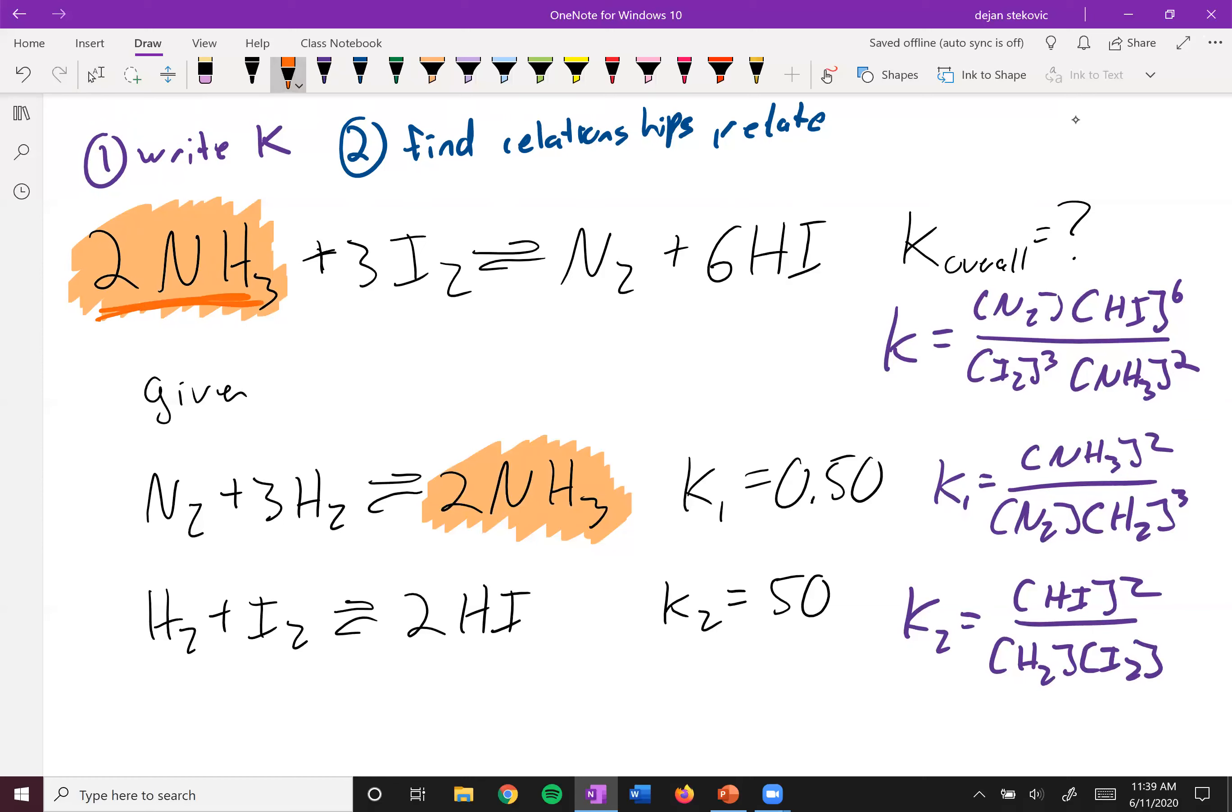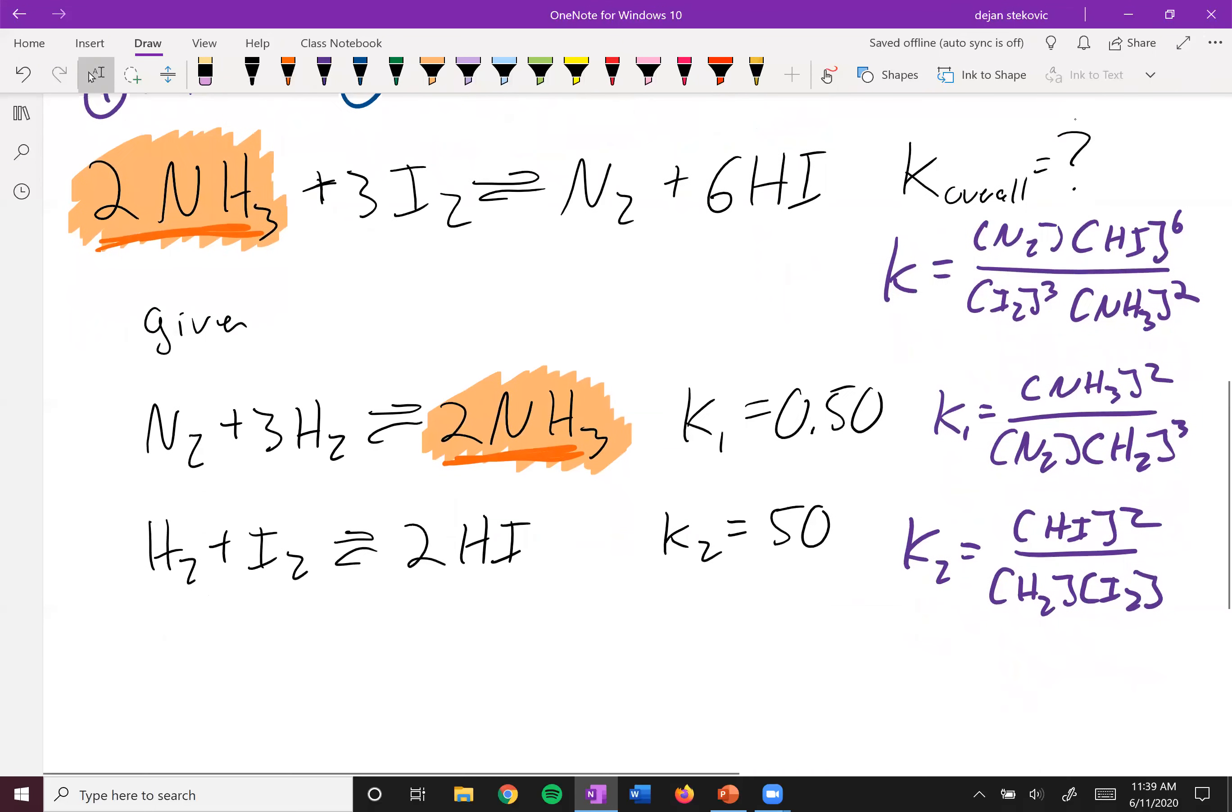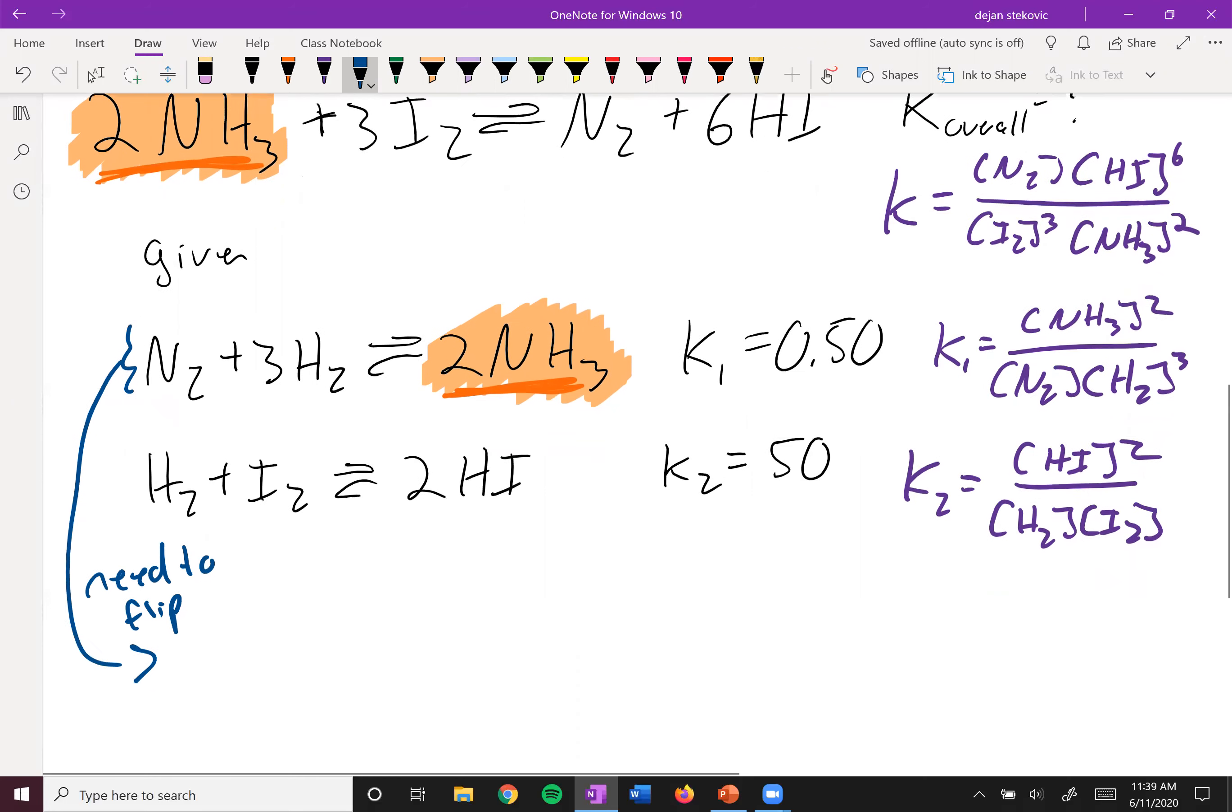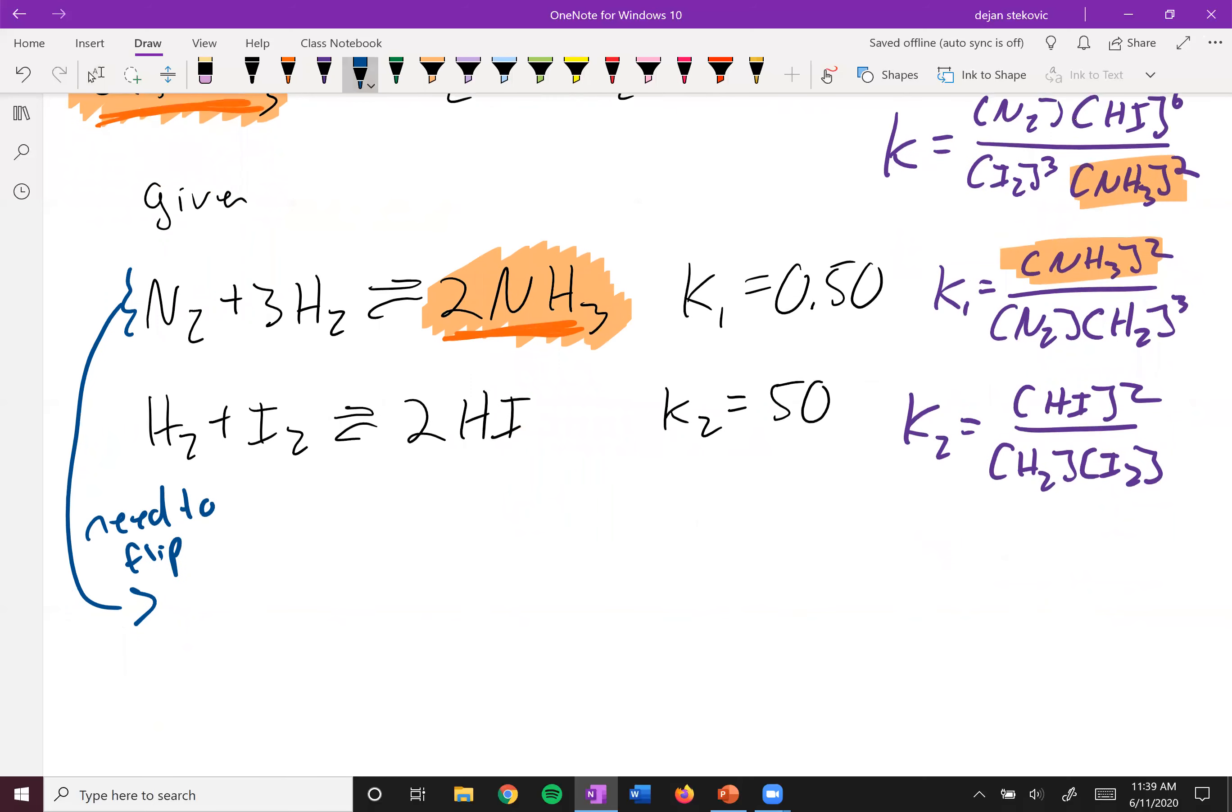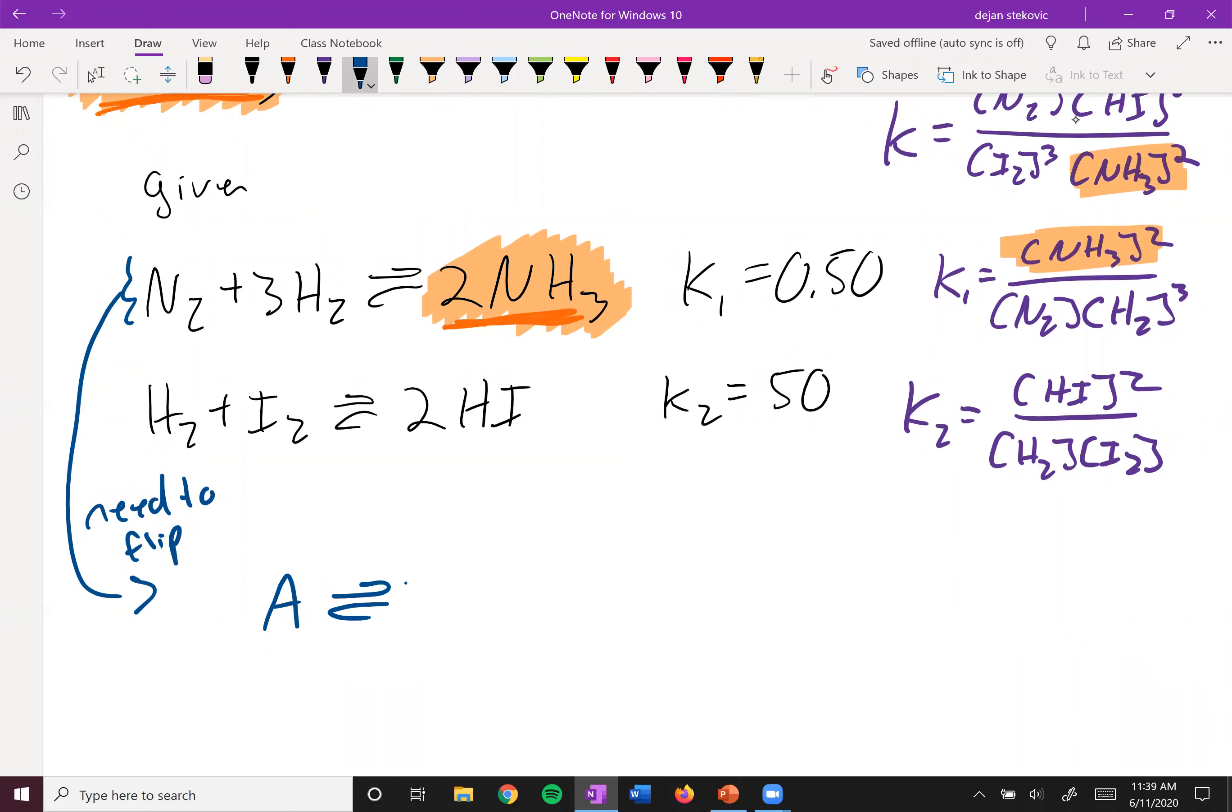We see here it's a reactant and here it is a product. So we need to manipulate our givens to look like what we want it to look like. And so we need to flip this equation. The coefficient is okay, the two is okay. It just needs to be flipped. And so we need to flip the equation. And you can see the same thing here. In this equation, NH3 is on the bottom, whereas in this K1, NH3 is on the top. So that'll give you kind of a clue of how we're going to flip it. So you can use the stuff on the top here. I'll show you just a generic example of what happens when you flip something.